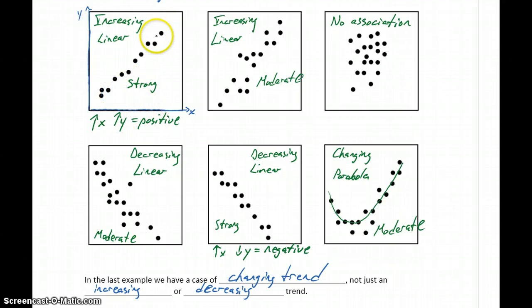Positive meaning that they change together. If one increases, the other increases. Or if one decreases, the other decreases. Versus a negative association, if one variable increases, the other decreases. So they're changing in opposite directions of each other.